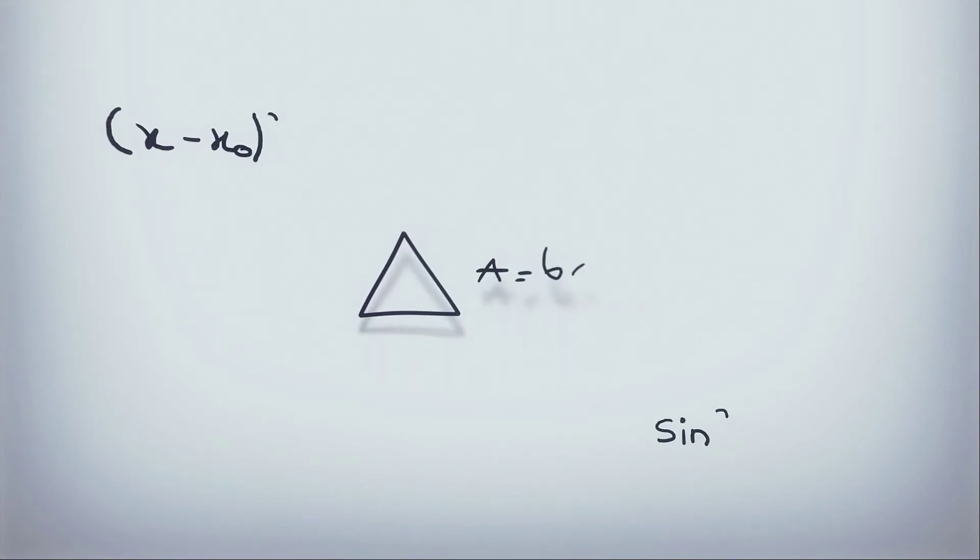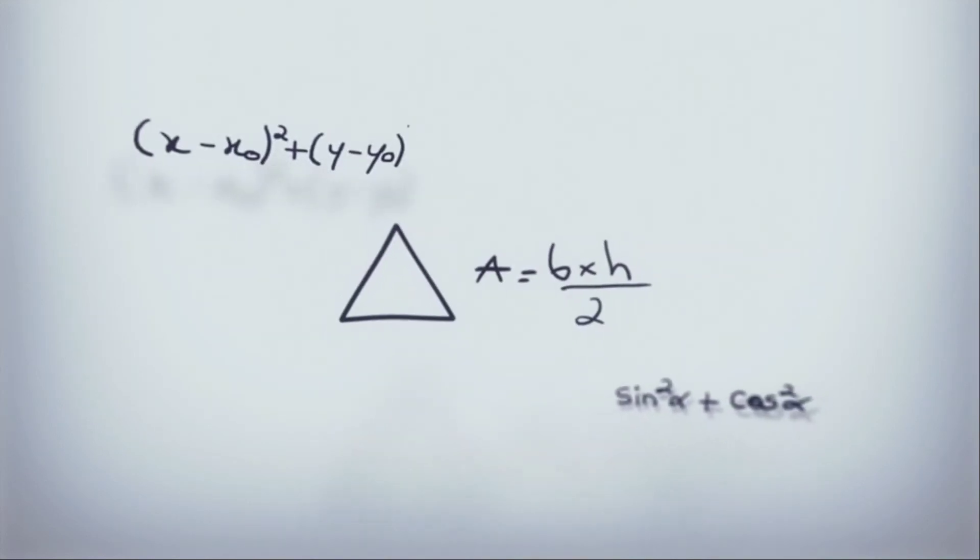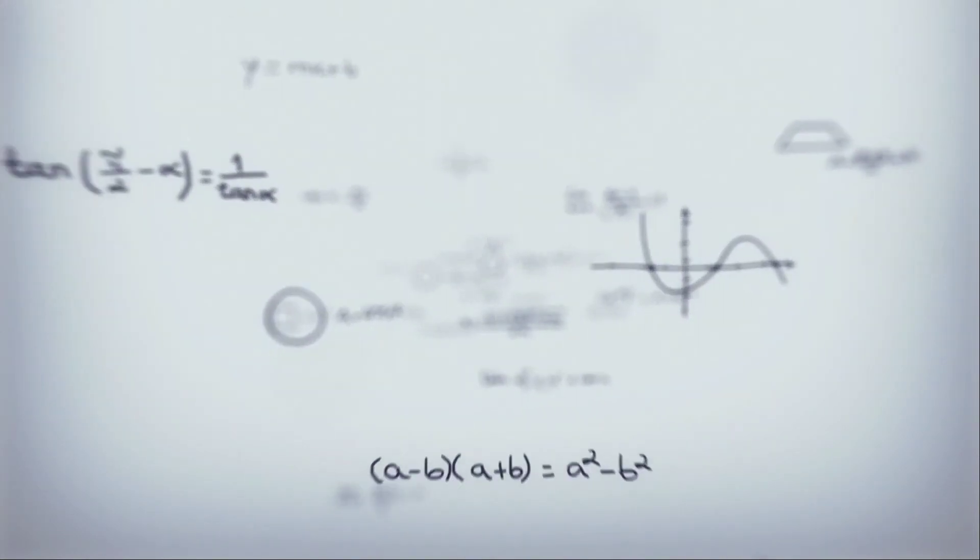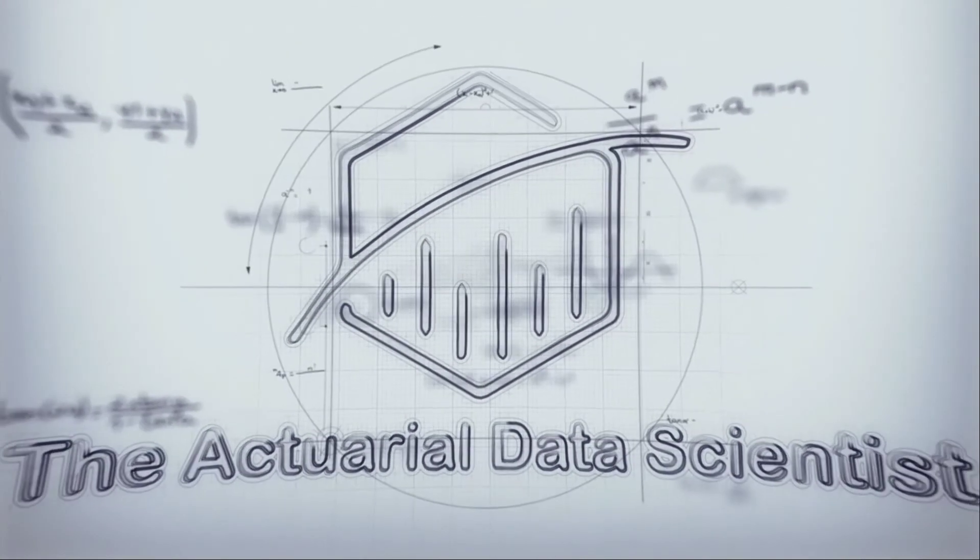By the end of this video, we will understand how to calculate the expected value of the product of deterministically related Poisson processes. Let's get started.